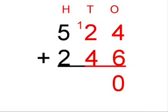Next you add the two numbers in the tens column, which are 2 and 4. 2 and 4 equals 6 plus the extra 1 equals 7.